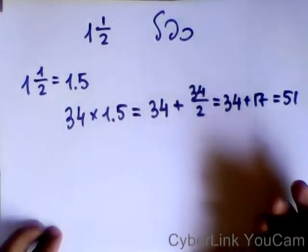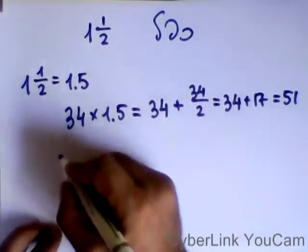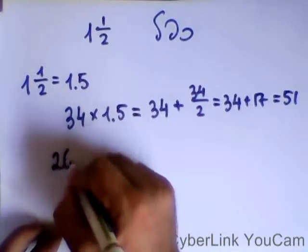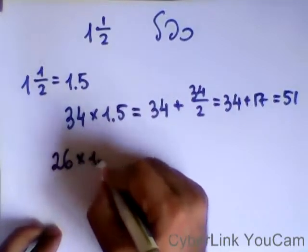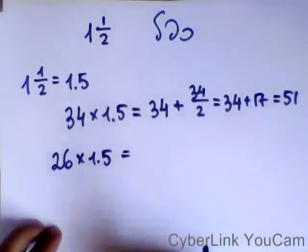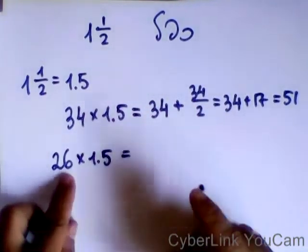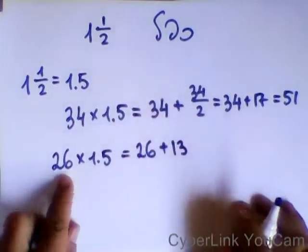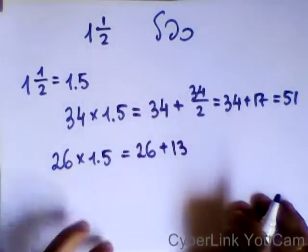בוא ניקח איזשהו מספר, נגיד 26 כפול אחת וחצי. כמה זה יוצא? התשובה יגיד 39, אבל למה? אני לוקח מספר הישון ומחבר עם חצי שלו, חצי של 26, 39.